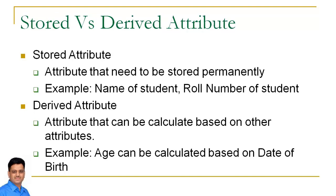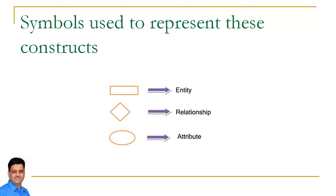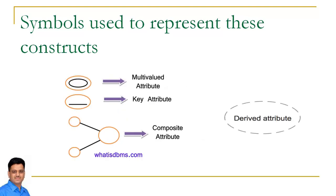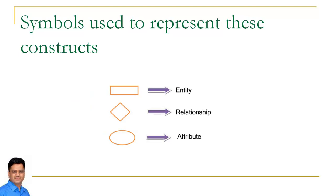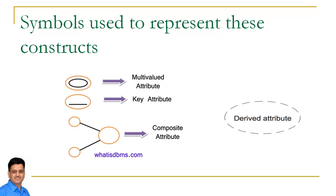Yeh types of attributes ko samajhna bahut zaroori hai ER model ko represent karne ke liye. Humne pichle session mein seekha tha ke ER model ek visual representation model hai. Toh jab hum kisi cheez ko graphically represent karna chahte hain toh uske kuch symbols hone chahiye. Attribute ko represent karne ke liye hum oval sign use karte hain. Agar ek attribute multi-value attribute hai, which can take more than one value, toh uske liye double oval sign hai.